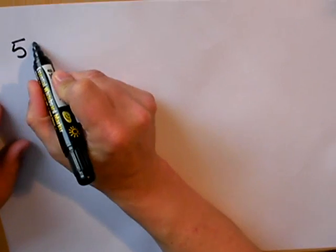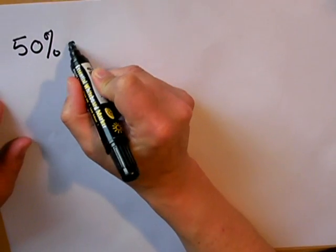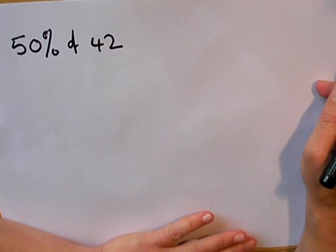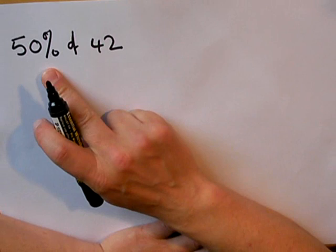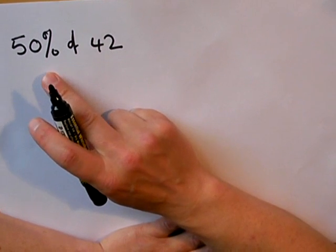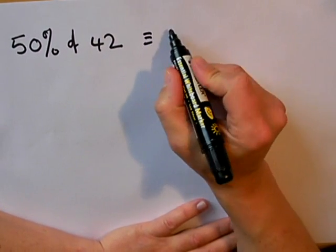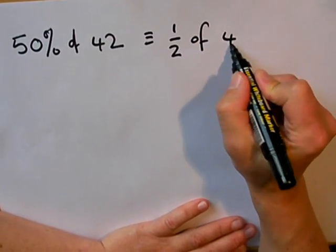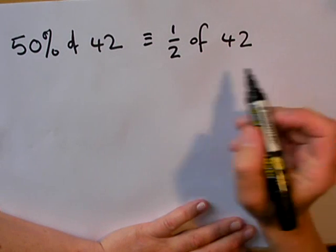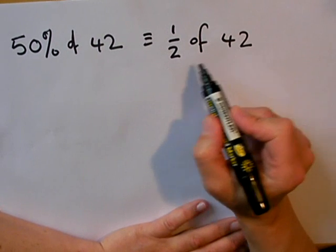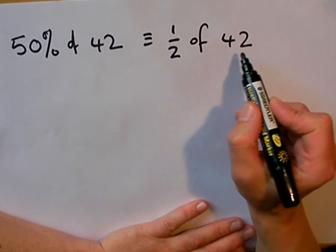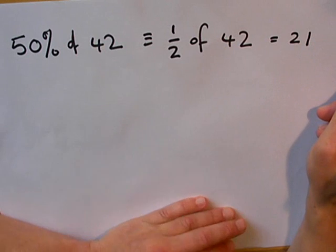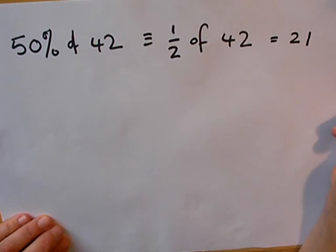I'm going to start off by looking at the question 50% of 42. Now I'm not going to deal with this as a percentage problem because 50% is the same as a common fraction, so I can rewrite the question as one half of 42. I know to work out a half of something I divide by two, so my answer for this one is going to be simply 21.